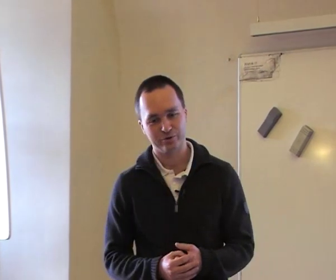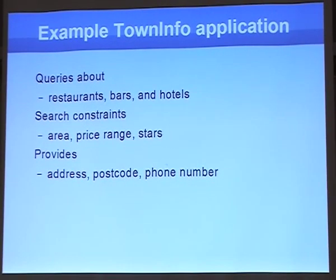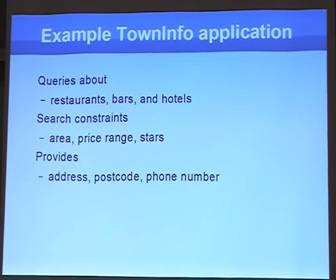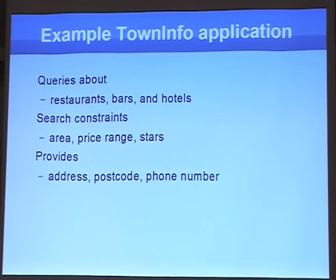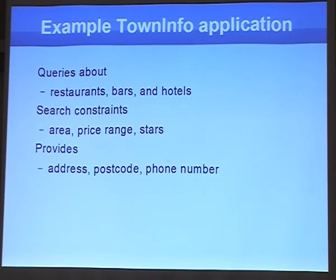Let me give an example of a tangible application we used to work on in Cambridge. This application handles queries — it helps you find restaurants, bars, or hotels. You pick up a phone, dial a number, and talk to an automated service. You specify your request and can constrain your search by area, price range, or number of stars. Once offered a venue, you can ask for address, postcode, or phone number.